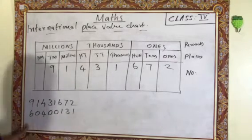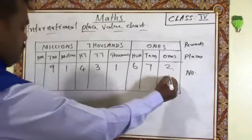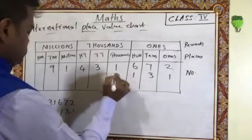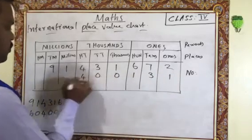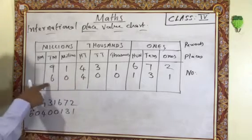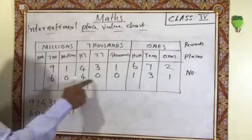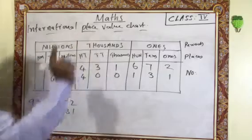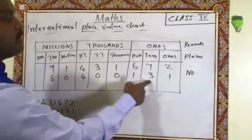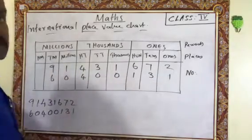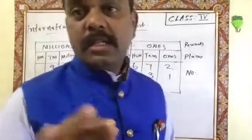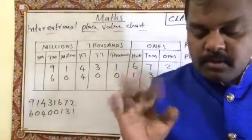Now I am going to place one more number in the International place value system. The number is 13,100,406. Placing it: Millions — 60,400, then Ones — 131. So the number reads 60,400,131. This is the way you have to read and write numbers in the International place value system.